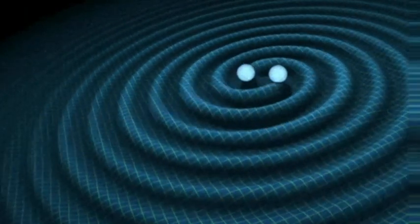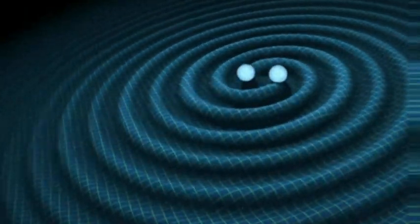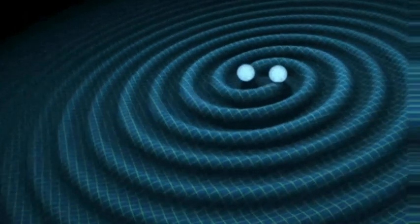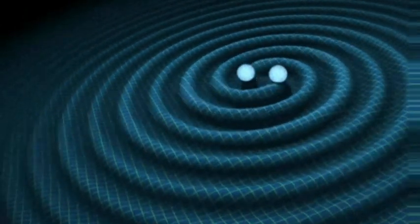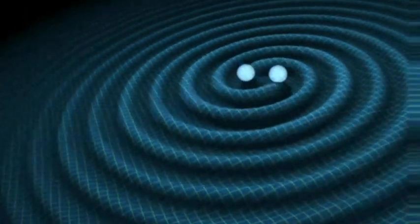According to Einstein's theory of general relativity, when two neutron stars revolve around each other, they create waves in space-time called gravitational waves.